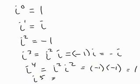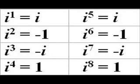And from this point on, the cycle repeats. Once you get i to the 4th equals 1, the powers of i repeat themselves in steps of 4. So there's i, negative 1, negative i, 1, i, negative 1, negative i, 1, etc.